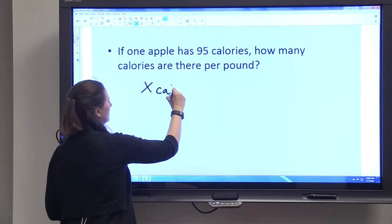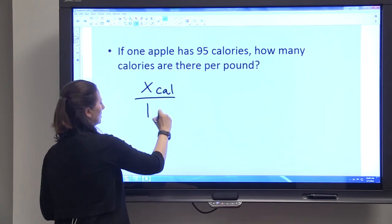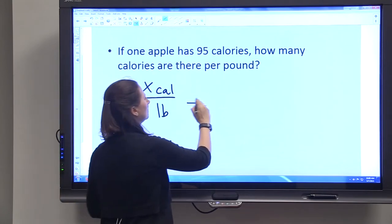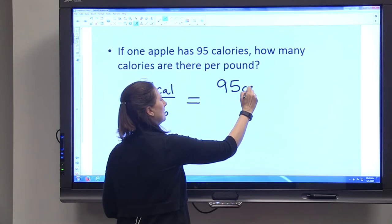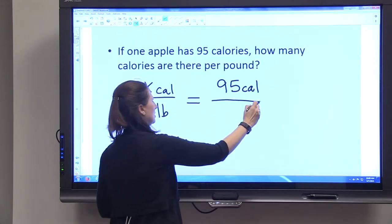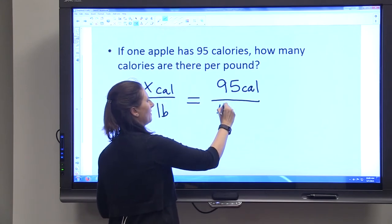So we want to know x number of calories in one pound, and we know that there are 95 calories in 0.45 pounds.